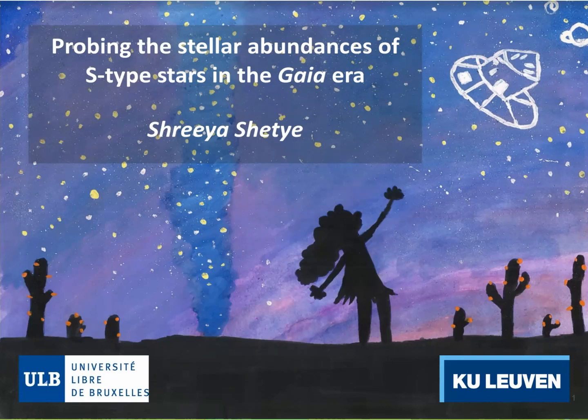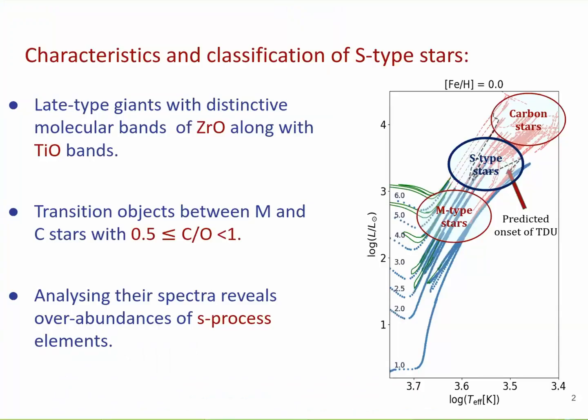Just to give you a brief introduction of what S-type stars are: S-type is a spectral class on the AGB, the Asymptotic Giant Branch. The special characteristic features of these stars are the zirconium oxide bands and titanium oxide bands. They have an oxygen-rich chemistry because they have a carbon-to-oxygen ratio between 0.5 and 1, and they are considered transition objects from the M-type on the AGB or the carbon stars.